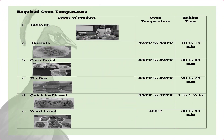Here is our oven temperature guide. We have three columns: the first column is types of product, the second column is oven temperature, and the third column is baking time.